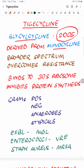The side chain modification of minocycline which makes TG-cycline gives it a broader spectrum of coverage and has also helped to overcome the resistance which tetracyclines have faced over the years.